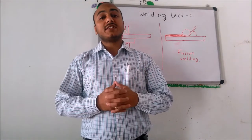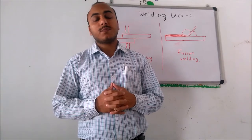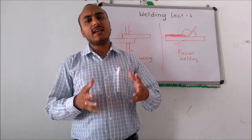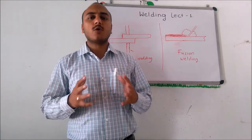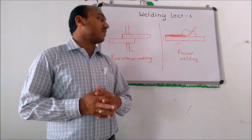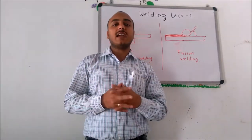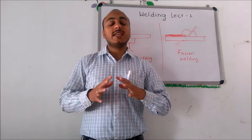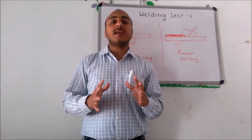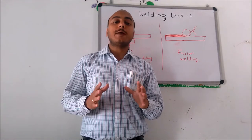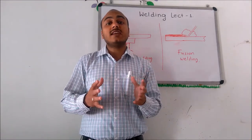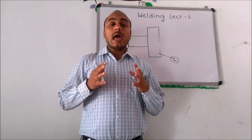Welding is a fabrication process that joins two materials, basically metals or thermoplastics. Mainly there are two types of welding: resistance welding and fusion welding. We will not discuss these processes in detail. This lecture is mainly oriented toward how welding should be represented on the drawing, and how we should read the symbol.